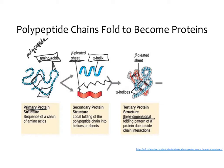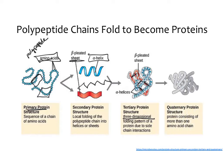Finally, we form quaternary structures — the final protein that can actually act in the cell. These often consist of more than one amino acid chain. A good example is hemoglobin, which has two alpha units and two beta units, meaning four different amino acid chains come together to form one protein. Here we see one light gray amino acid chain and one dark gray one, both folded together to form the final protein.